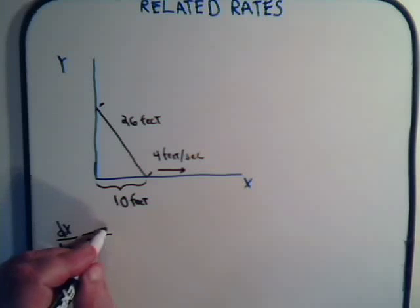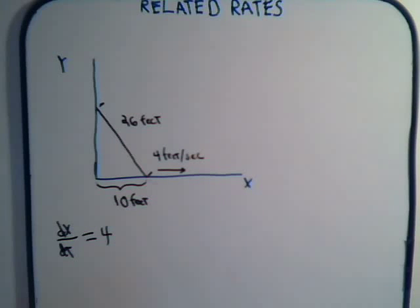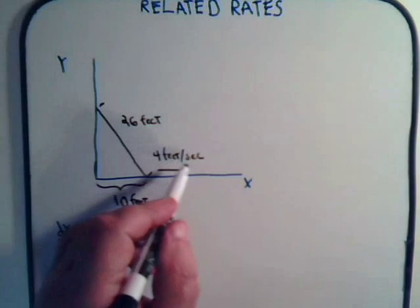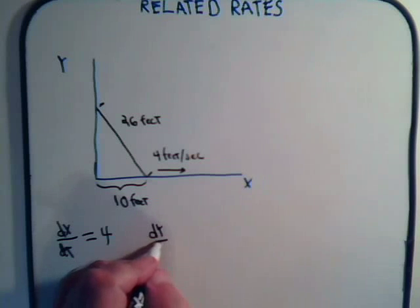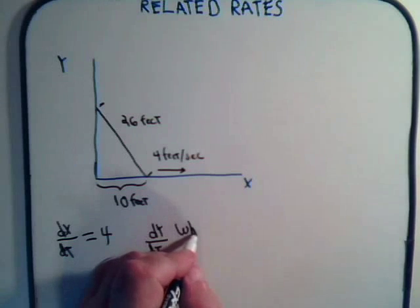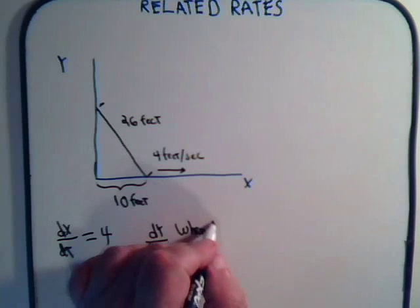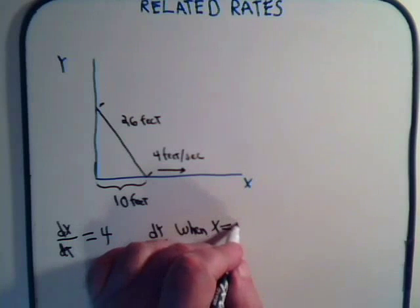That's 4. I haven't found the units, I'm too lazy, but everything is in feet and the time was expressed in seconds. So, you know what dx/dt is? What we need to find then is dy/dt when x equals 10.